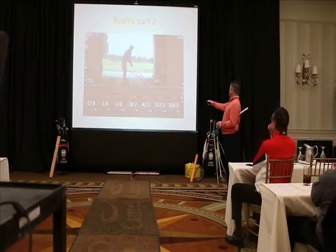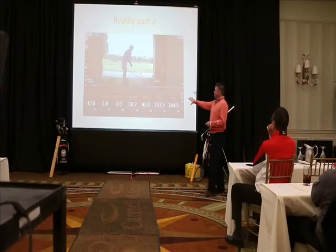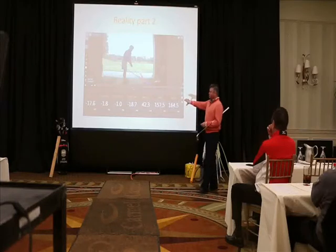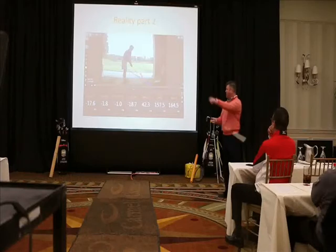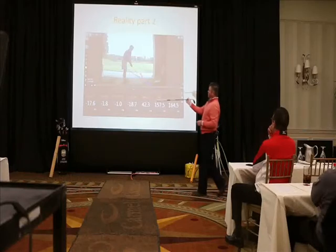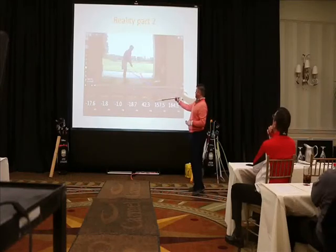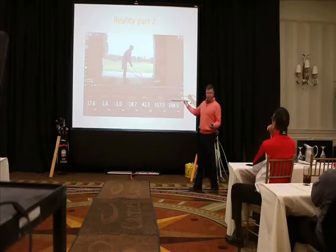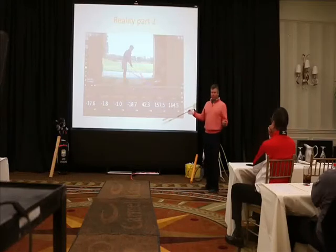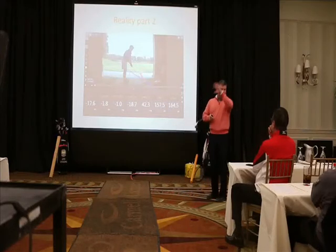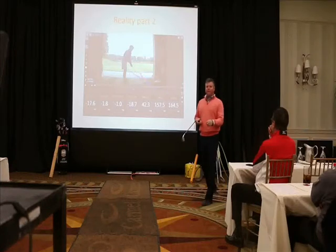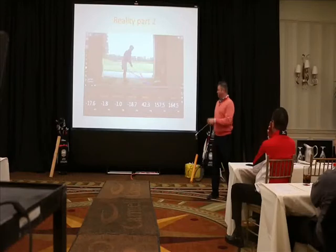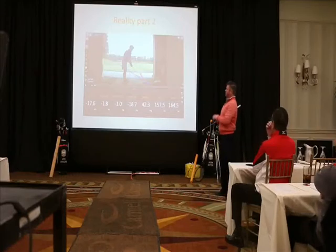Look at the square — so this would be probably my typical screen that I would put up for a typical lesson. I just want to know club path, face, attack angle, swing direction, maybe swing plane — I don't always put that up — and then ball path. I don't put all the other stuff up there unless I want to look at dynamic loft or high eight or whatever.